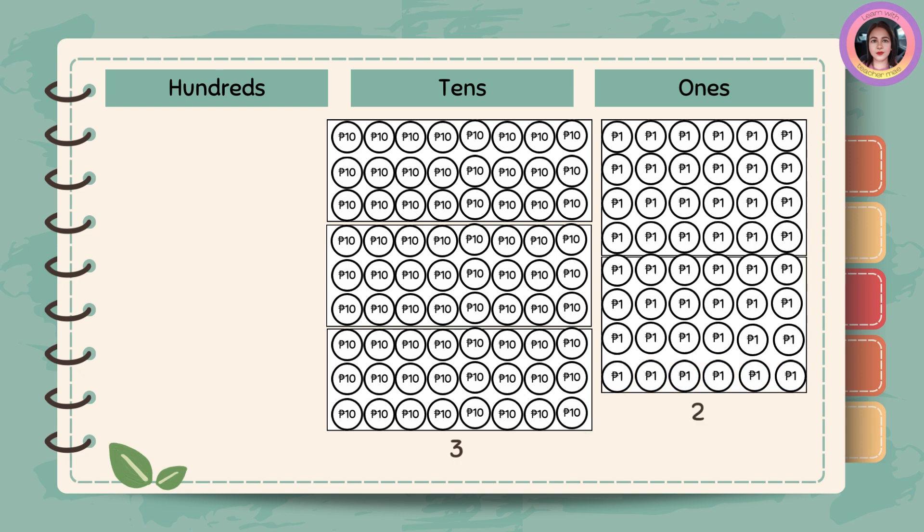Group the tens in 24. There are 3 groups of 24. Then group the ones in 24. There are 2 groups of 24.